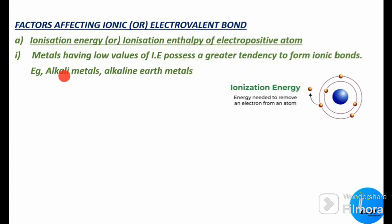For example, alkali metals and alkaline earth metals have low values of ionization energy and therefore have a greater tendency to form ionic bonds. Examples of alkali metals include sodium and potassium.